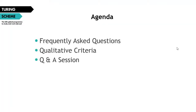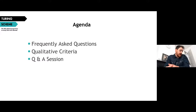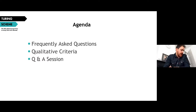This is the short agenda for today's webinar. The main focus of today's session is to go over the Turing Scheme's qualitative assessment criteria and provide practical examples which can be applied by applicants working on the form. We'll start off by covering frequently asked questions received from our helpline and previous webinars, then go through each individual element of the assessment criteria and explain how it should be linked into the scheme's objectives, and finish with an open forum Q&A session.